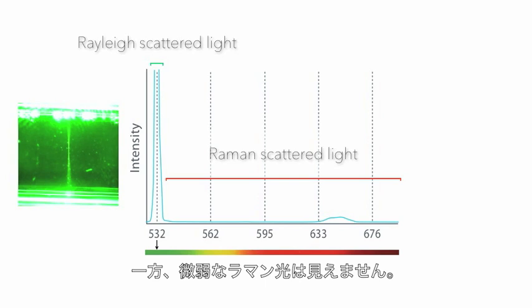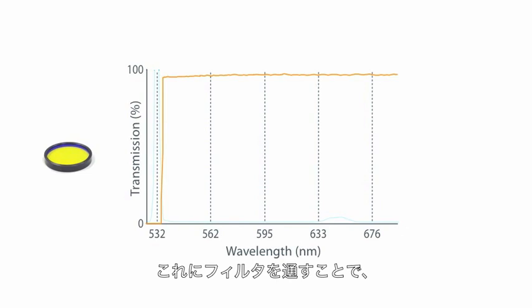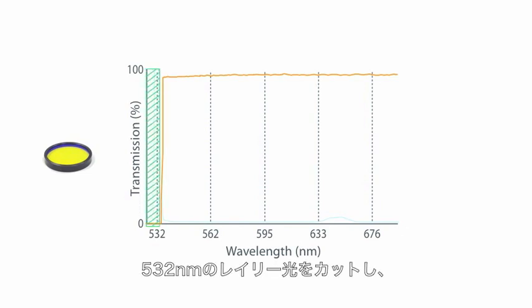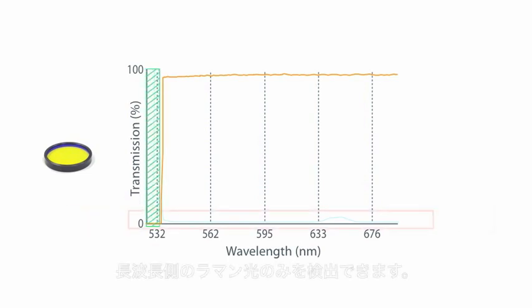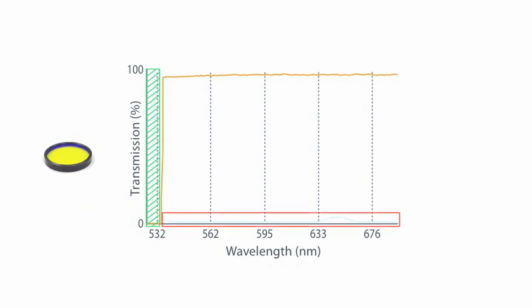Raman scattered light, on the other hand, is too weak to be seen. Next, by using the filter, Rayleigh scattered light at 532 nanometers is blocked. Now the Raman scattered light emitted at a longer wavelength is visible.